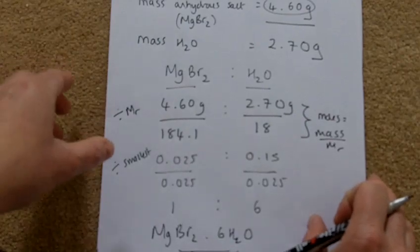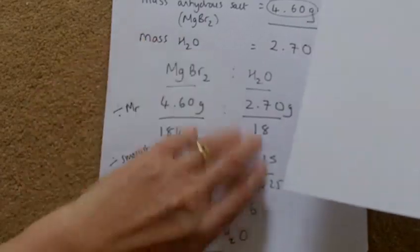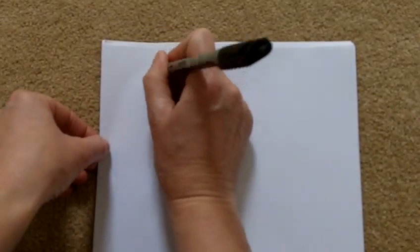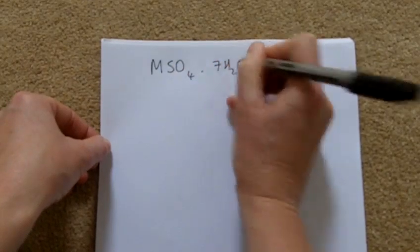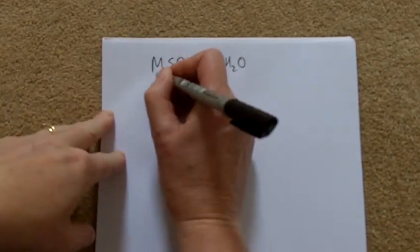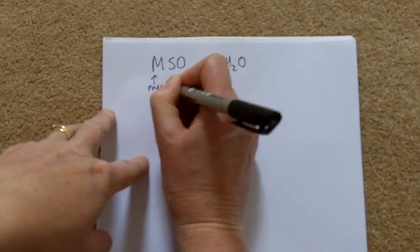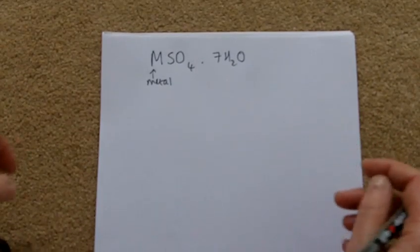There's another method we need to be able to use. What if the formula given is MSO₄·7H₂O — so we know the water this time, but we just don't know what the metal is? It could be calcium, magnesium, iron, copper, or zinc sulfate. We don't know what it is and you have to work it out.